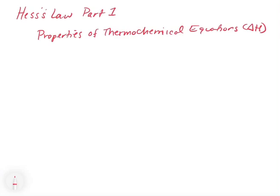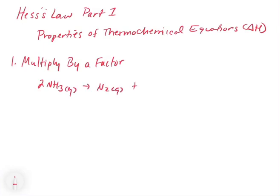The first thing we can do to a thermochemical equation is multiply it by a factor. For example, we have 2NH3 gas goes to N2 gas plus 3H2 gas. Let's say the delta H for this is equal to 91.8 kilojoules.